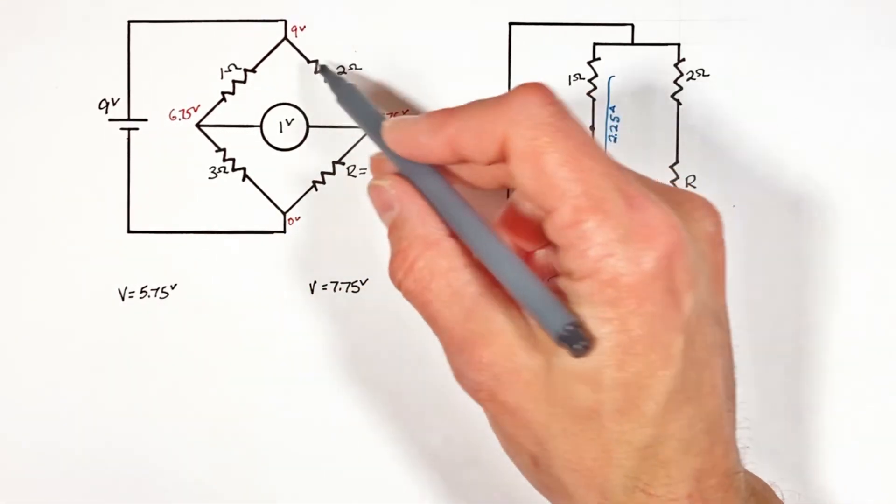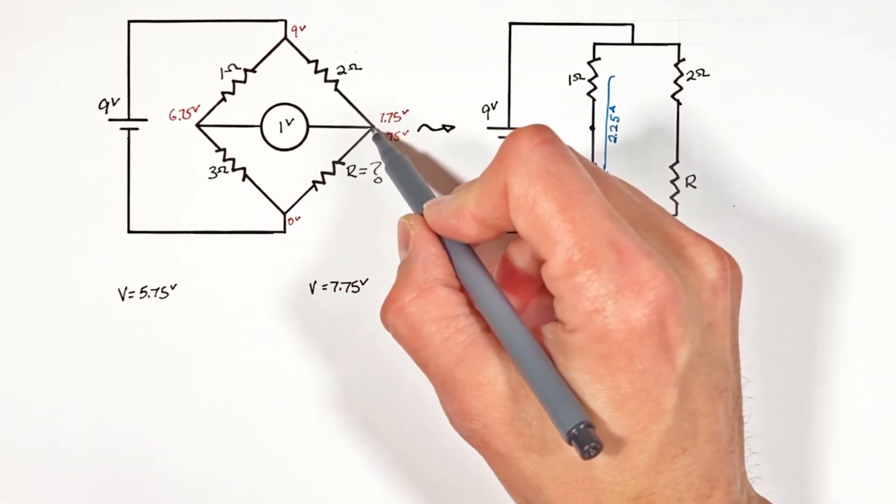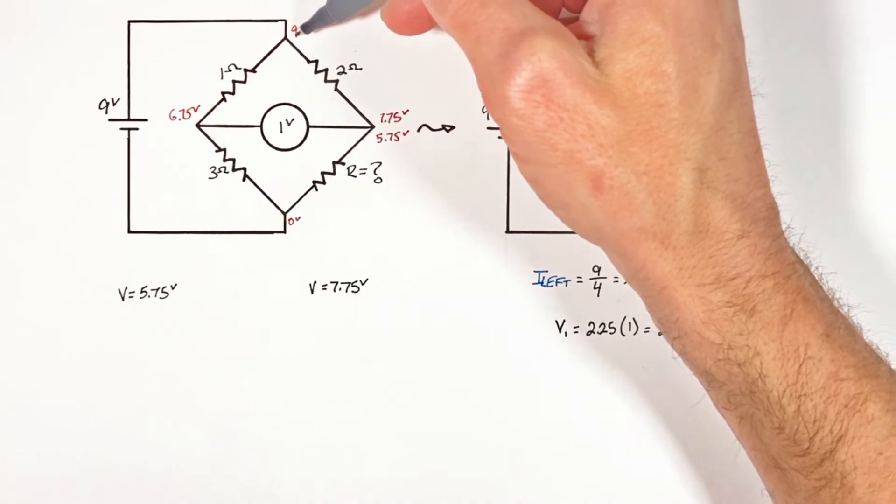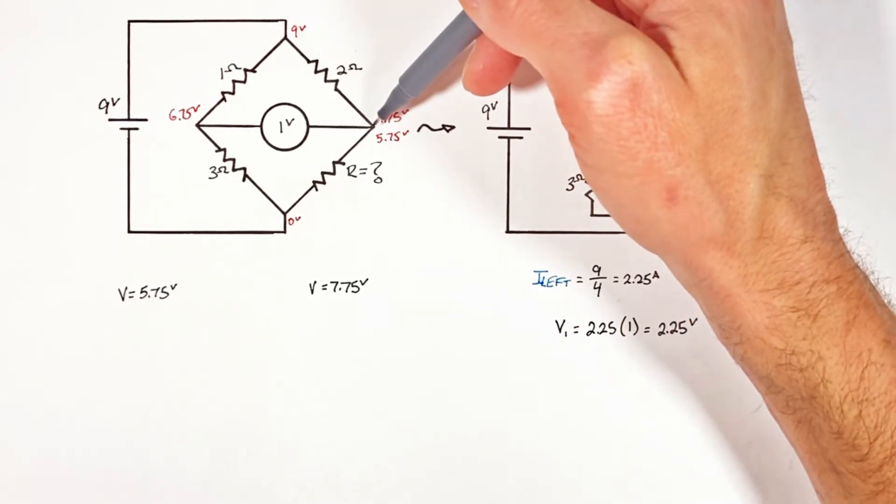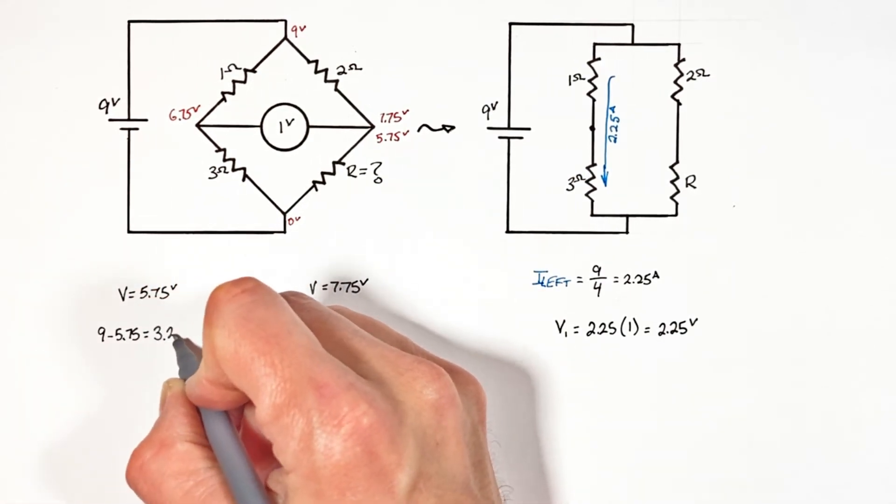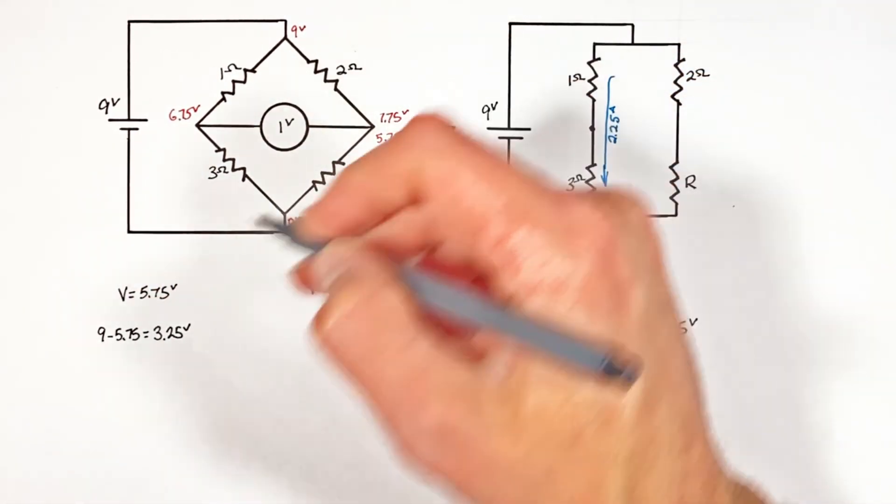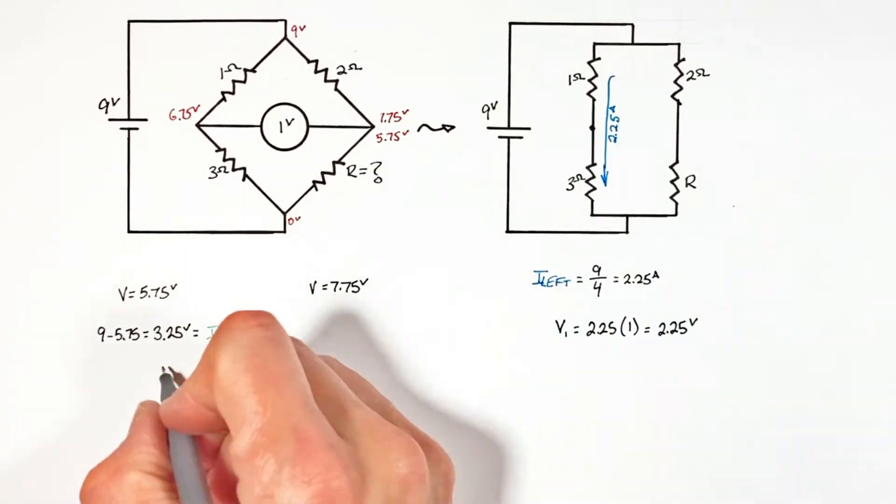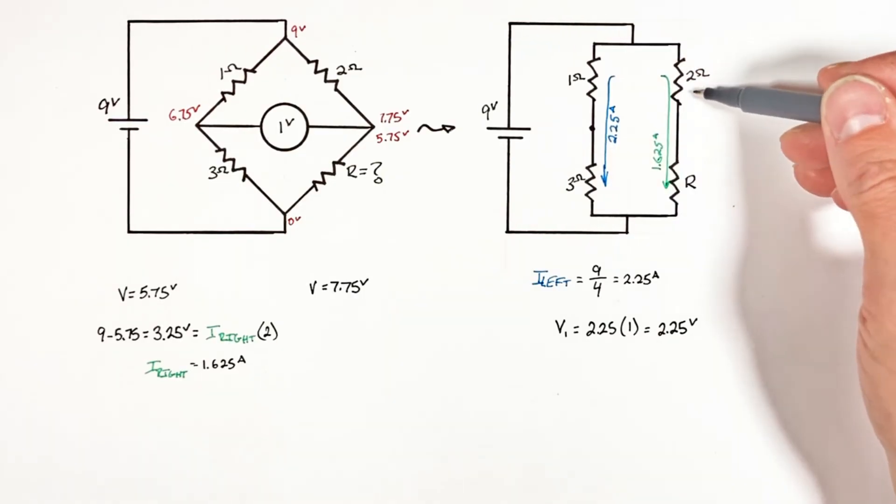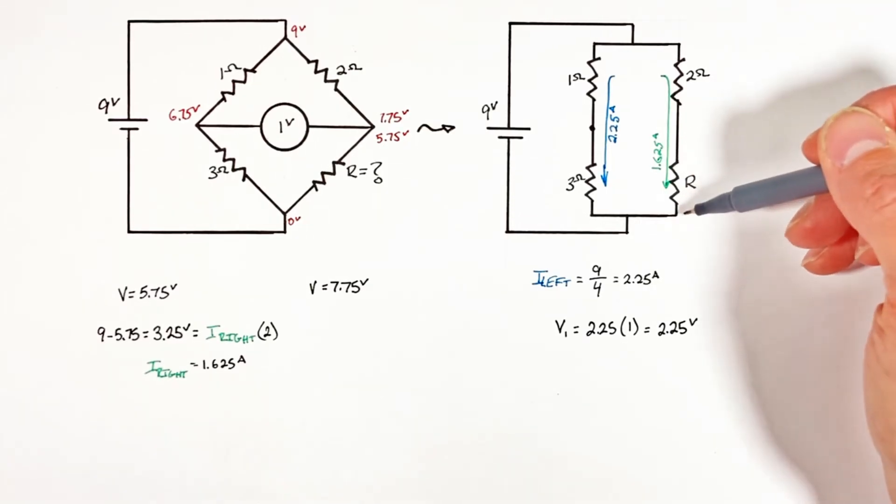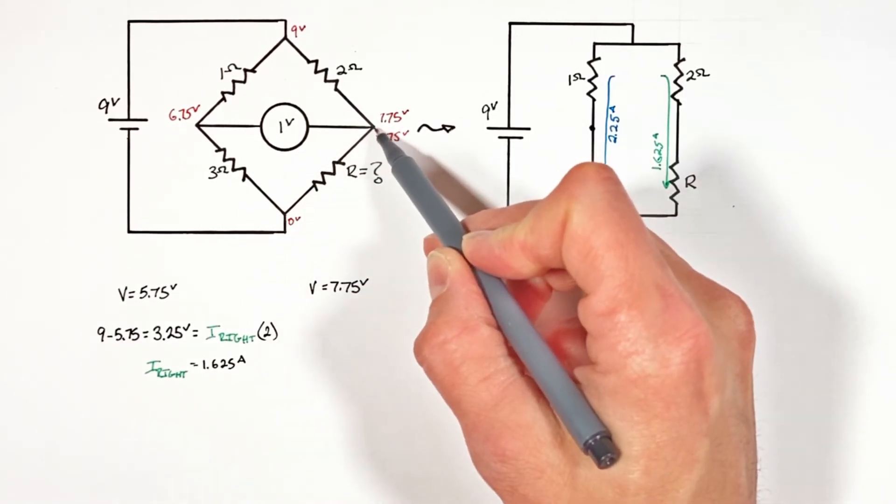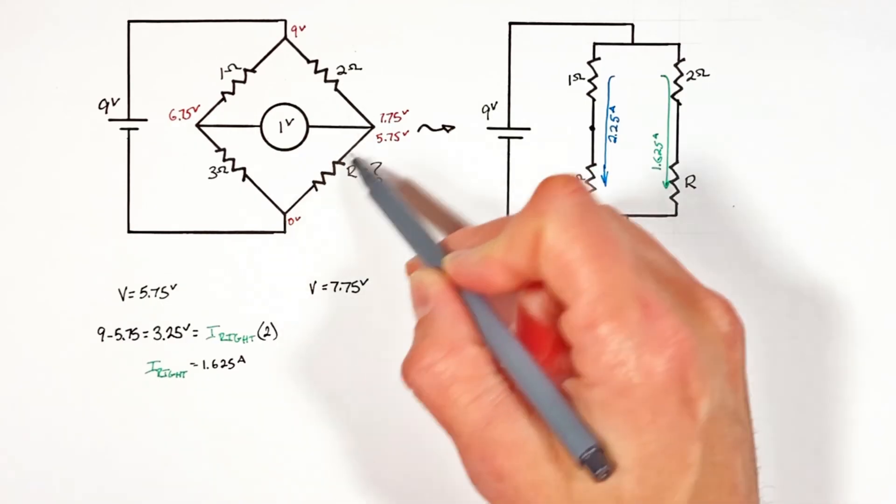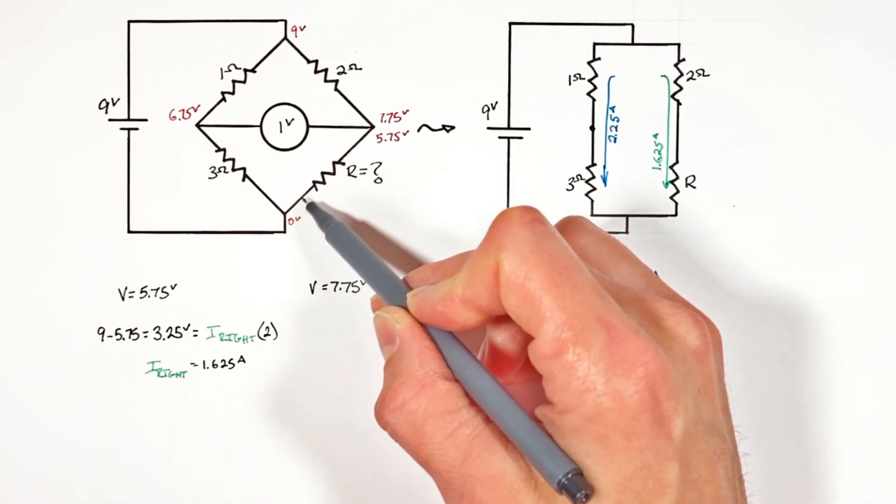So starting over here we know if the potential at this point right here is 5.75 volts that means the current as it passes from this point with the potential of 9 volts to right here is losing 3.75 volts. But we can use Ohm's law to solve for that current through the right side now. And knowing all of the charge which passes through the right hand side of this bridge is going to pass first through the two ohm resistor then through our unknown resistor and knowing that there's 5.75 volts of potential between this point here and this point here or really 5.75 volts across this resistor we can solve for the value of R.